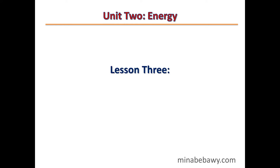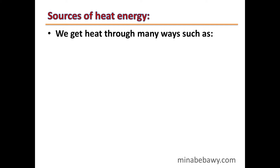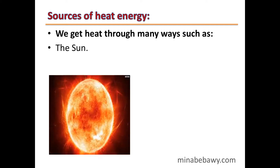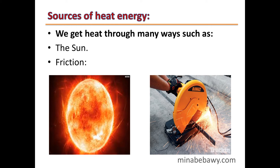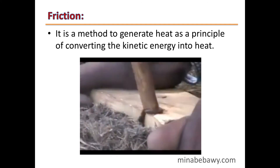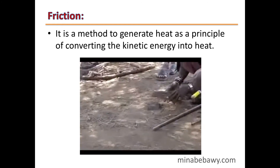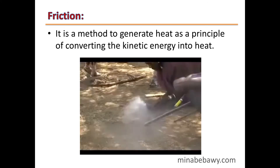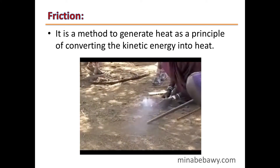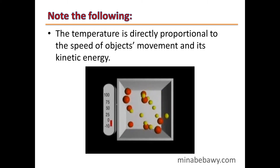Unit 2, Energy, Lesson 3: Heat Energy. Sources of heat energy — we get heat through many ways, such as the Sun and also from friction. Friction is a method to generate heat as a principle of converting kinetic energy into heat energy. As you can see from this video, kinetic energy is converted into heat energy. Note: temperature is directly proportional to the speed of an object's movement and its kinetic energy.